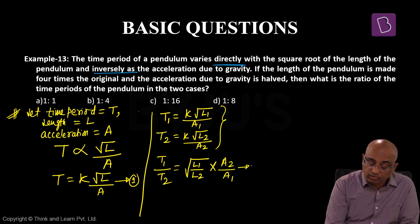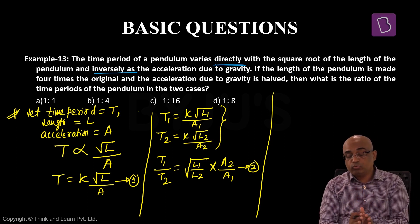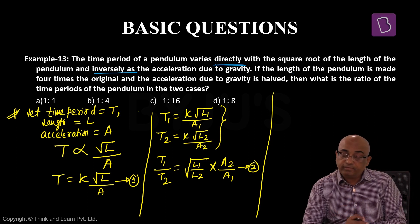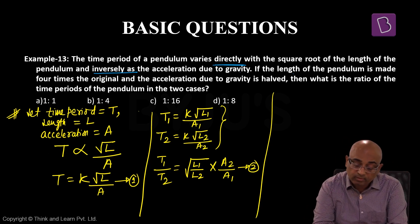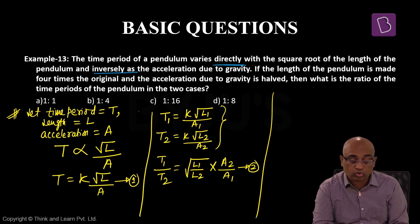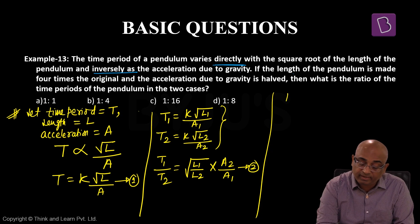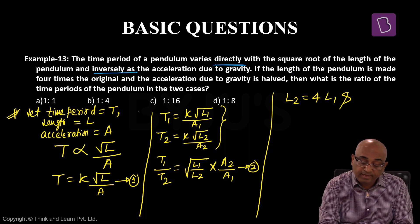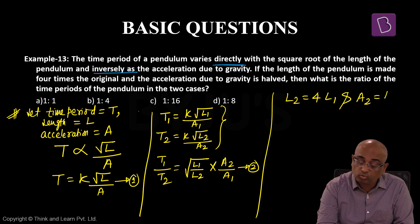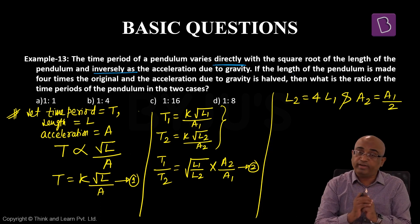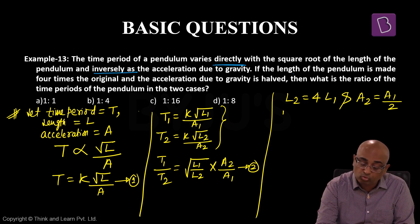यह हमारा equation number 2 है। इस question में equation number 2 की मदद से इसको हल करेंगे। Question के last line में दिया है: L2 is equal to 4L1 (length चारगुना) और A2 is equal to A1 by 2 (acceleration आधा)। यह दो relations L1, L2 और A1, A2 के बीच में दिए हुए हैं, इसको equation number 2 में put करेंगे।